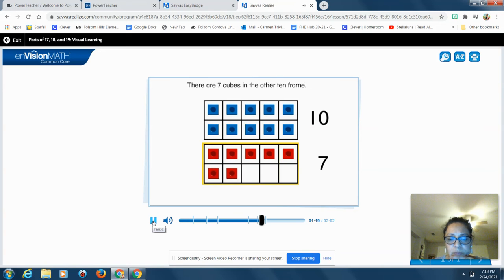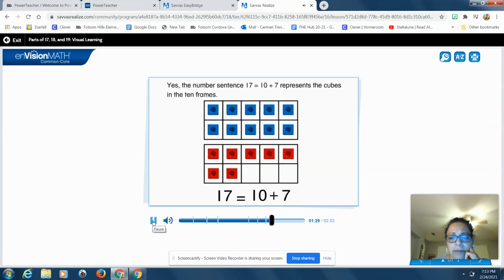I think I heard you guys. How many on the bottom? There are seven cubes in the other 10 frame. Good job. Does this number sentence tell about the cubes? 17 equals 10 plus 7. Does that match the picture? Yes, the number sentence 17 equals 10 plus 7 represents the cubes in the 10 frames.